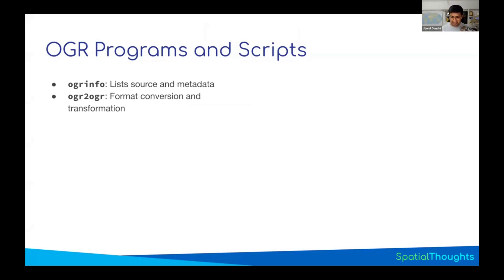OGR to OGR is a powerhouse of functionality. Essentially all your data pre-processing operations that you do in a GIS are part of OGR to OGR. Many times you have a workflow of 10 to 15 steps in a GIS, which will be a single command in OGR to OGR. Once you learn how to do this, you'll be able to process data much faster — just run one command and your data is transformed, nulls are gone, and it's ready.